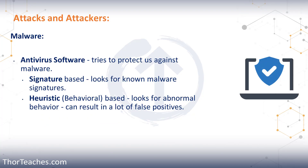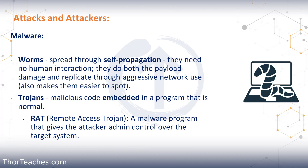Antivirus software can be signature-based and behavioral-based (heuristic) — any modern antivirus is both. Signature-based looks for all known malware signatures, which number in the millions. The heuristic or behavioral-based system looks for any abnormal behavior on our system, though that can also lead to a lot of false positives. Worms spread through self-propagation without needing human interaction; they have a payload to damage systems and a replication component, which also makes them easier to spot.